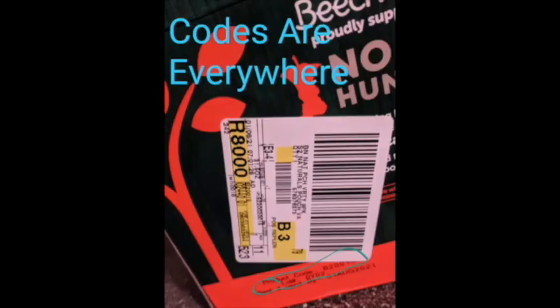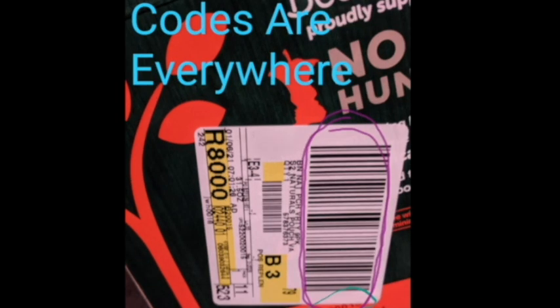Once you start looking for them, codes are everywhere. Even just on this box of baby food, we see barcodes, product codes...